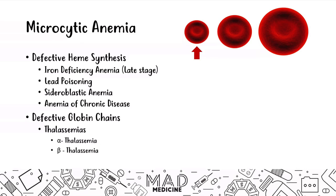Now we're going to move on and start talking about iron deficiency and go from there. The next several videos will cover microcytic anemias, after which we'll go to normocytic and then macrocytic anemias. If you need a quick refresher, go to our YouTube channel where you can watch the playlist — everything is set up in order so it all builds off of each other.